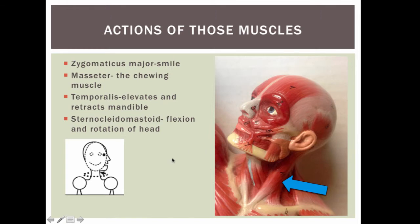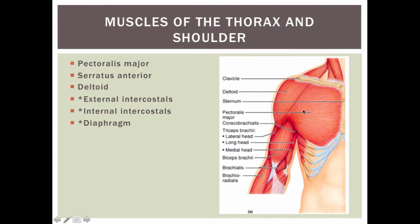Muscles of the thorax and shoulder include the pectoralis major, the serratus anterior, which is serrated like a serrated knife, the deltoid, which is triangular in shape, and then the external intercostals and internal intercostals. The diaphragm is starred because it is a deep muscle — it would be a parachute-shaped muscle on the inferior border of the thoracic cavity and the superior border of the abdominal cavity.